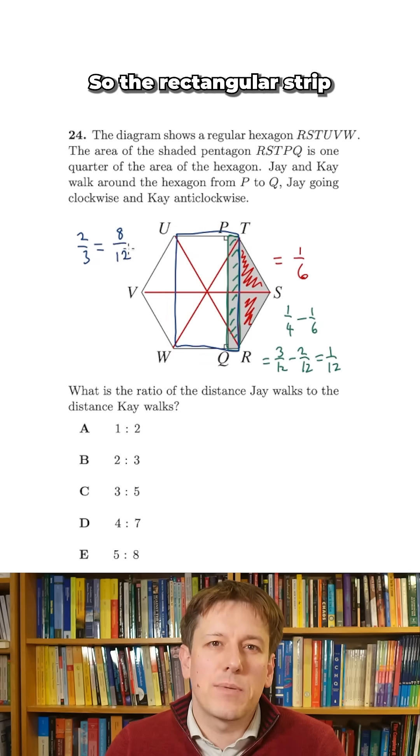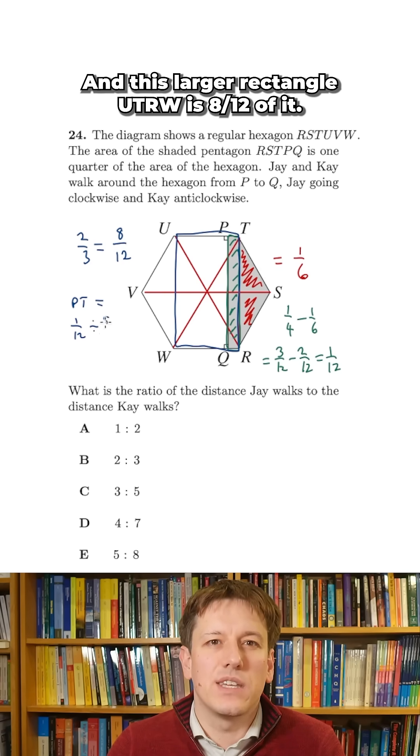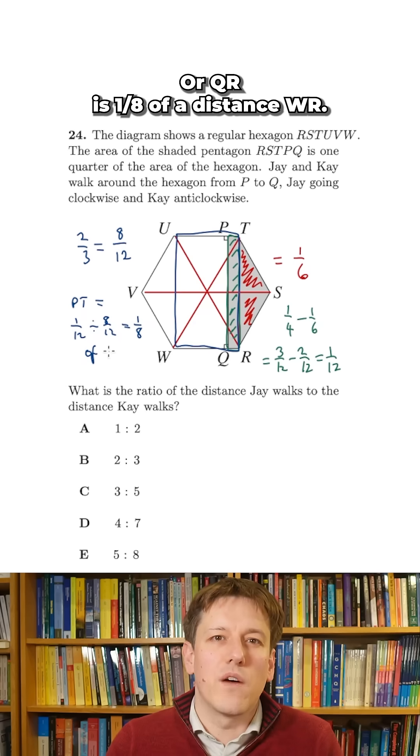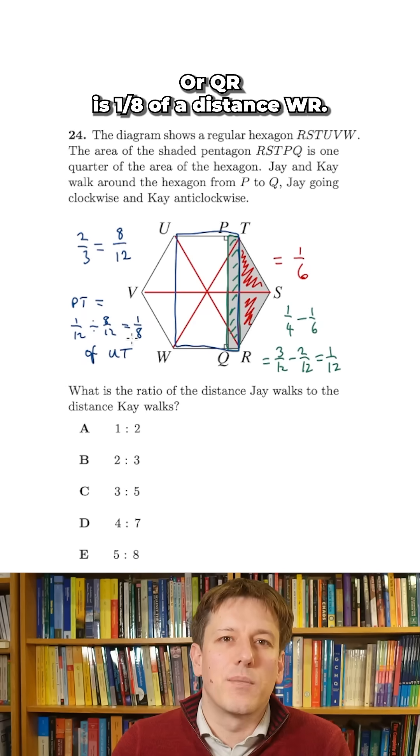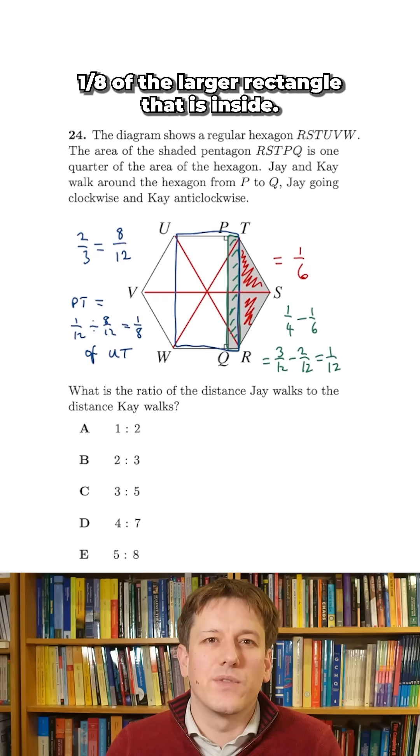So the rectangular strip PTRQ is one twelfth of the overall hexagon, and this larger rectangle UTRW is eight twelfths of it. So it must be that PT is one eighth of the distance UT, or QR is one eighth of the distance WR. Now this rectangle is one eighth of the larger rectangle that it's inside.